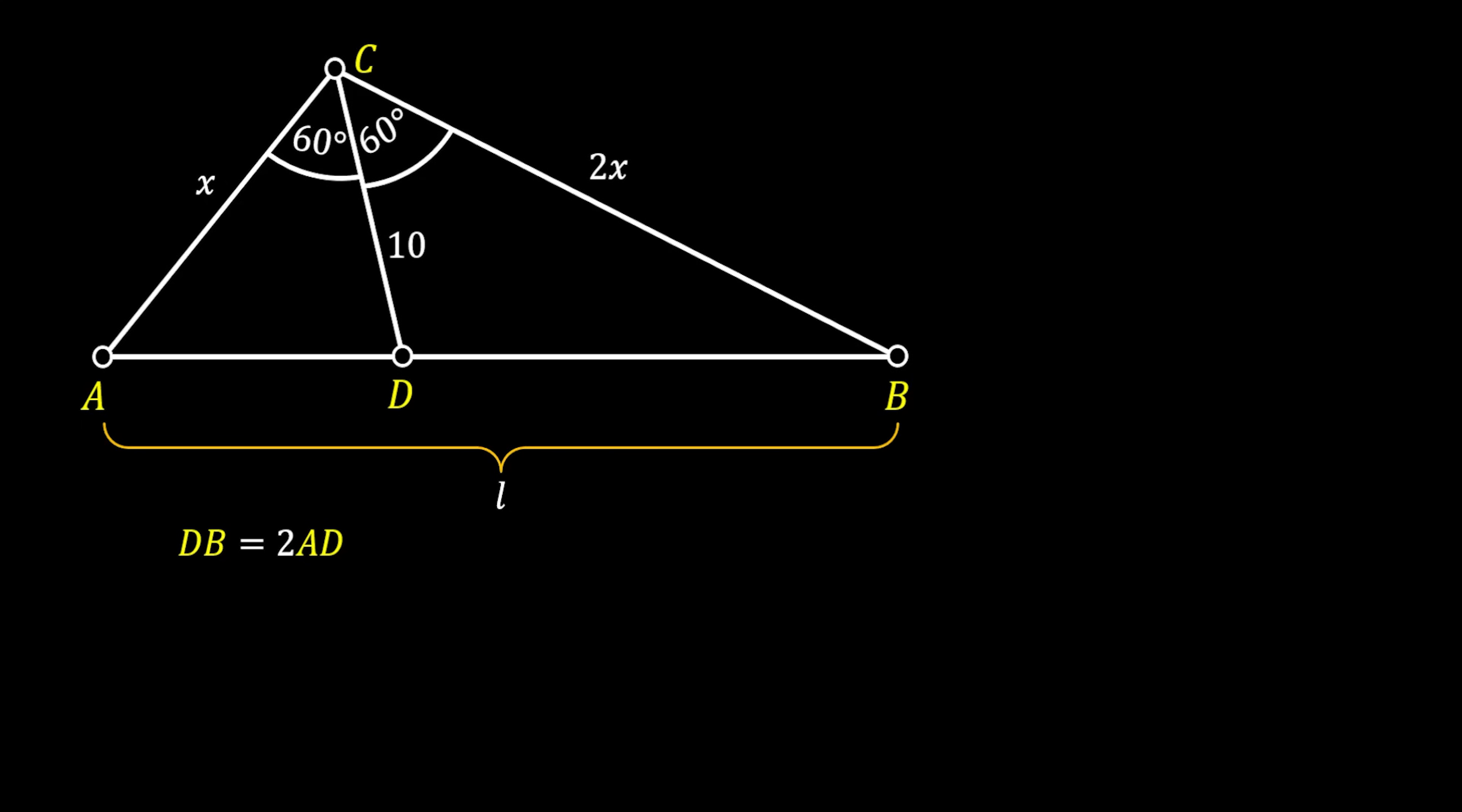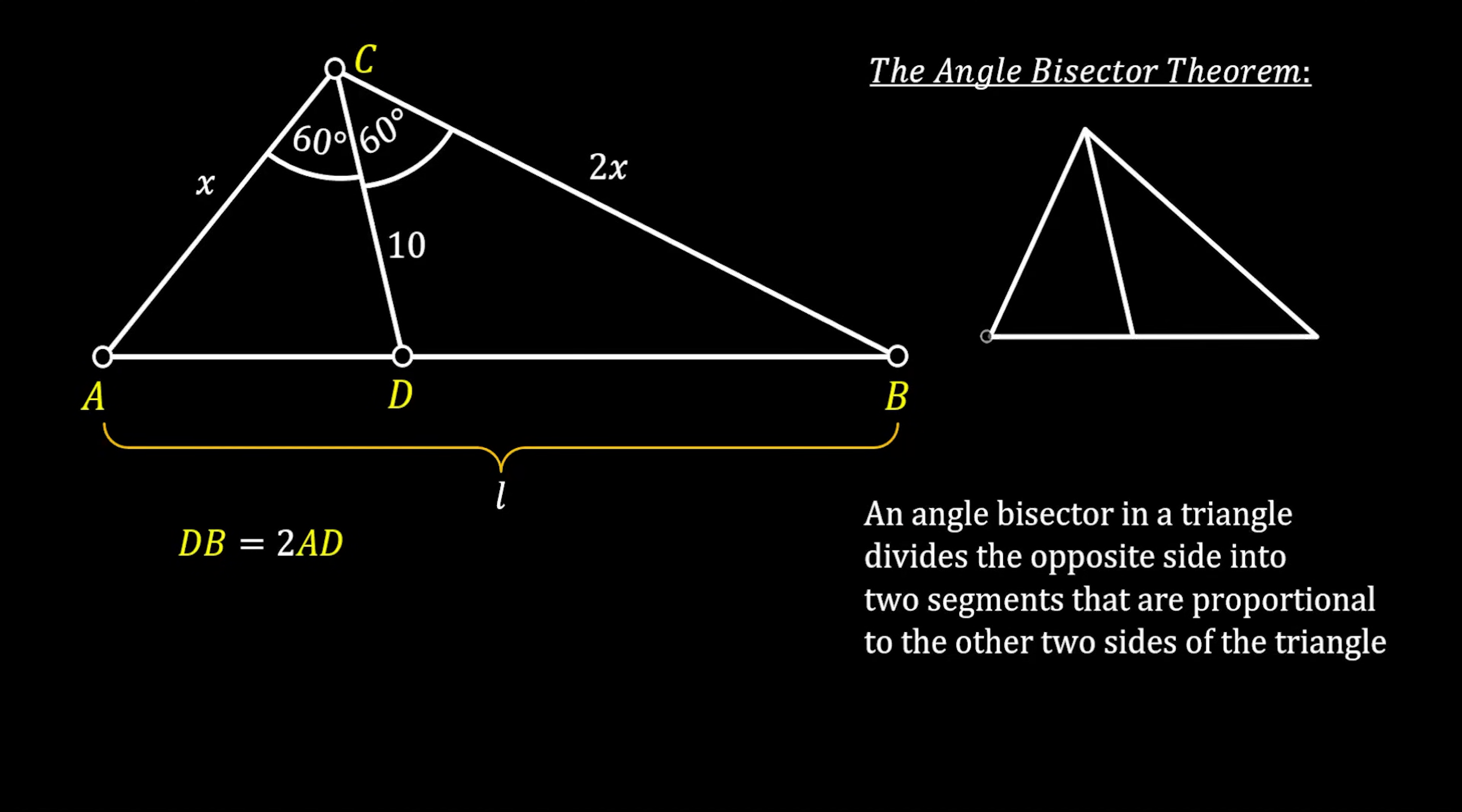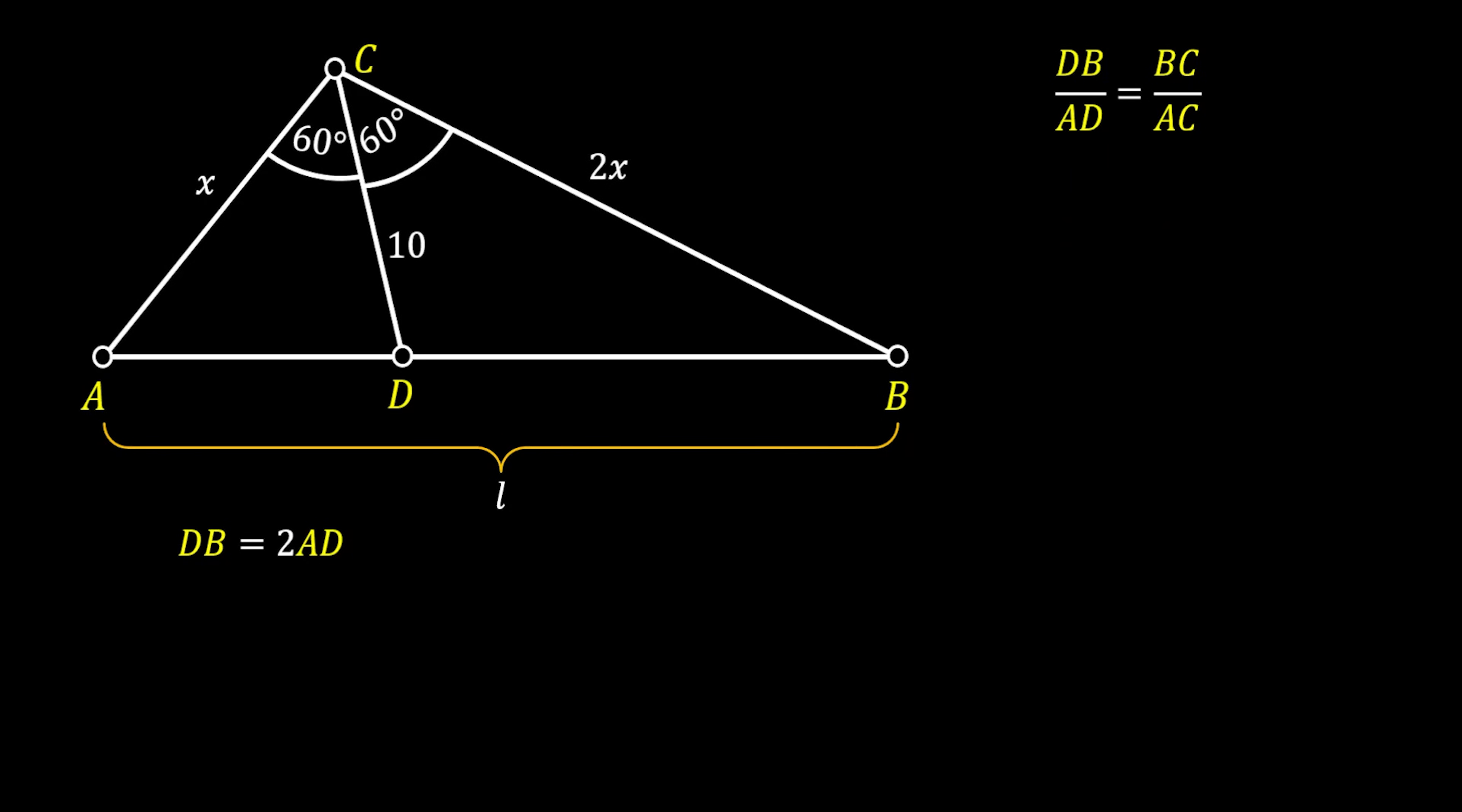Well, if you are wondering which theorem states this, this theorem is actually called the angle bisector theorem, and it states that an angle bisector in a triangle divides the opposite side into two segments that are proportional to the other two sides of the triangle. We can substitute the value for the side BC and AC for 2X and X, and after simplifying, we will get that DB over AD equals to 2, which means that DB must be equal to 2AD.